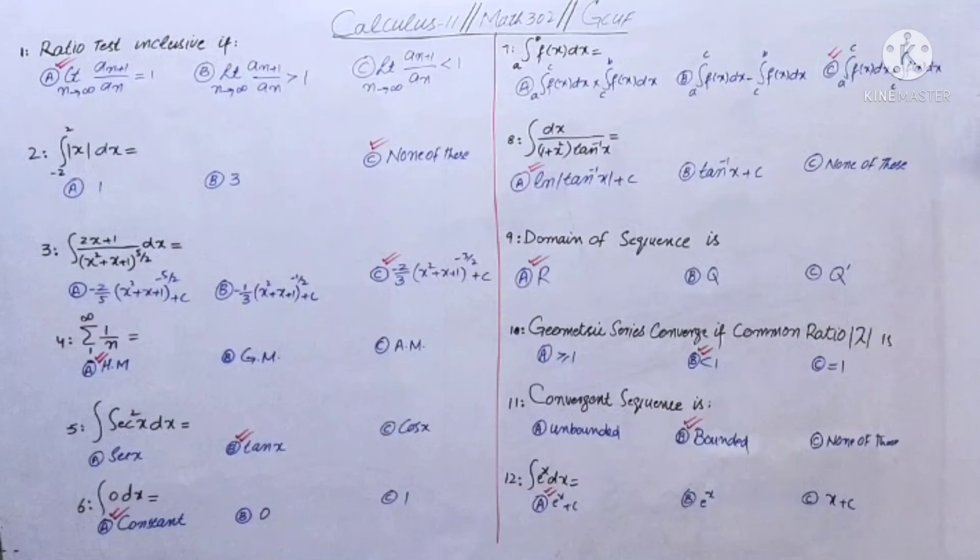Domain of sequence will be real numbers. Geometric series convergent if common ratio lambda mod less than 1. Convergent sequence is bounded. Integral dx will be equal to x plus c.